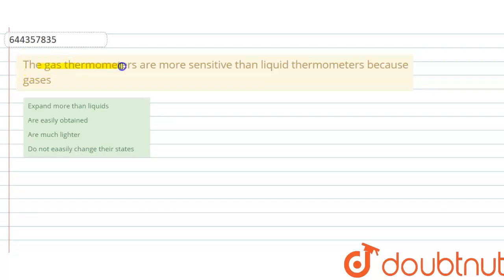question to you. The gas thermometers are more sensitive than liquid thermometers because gases expand more than liquids, are easily obtainable, are much lighter, or do not easily change their state. Okay, so as we know that